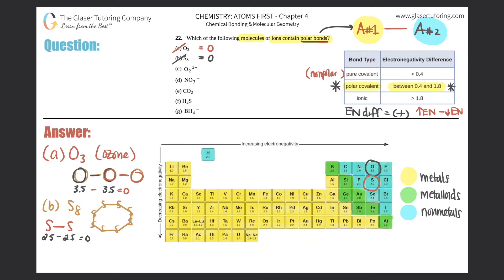Next, part C is O₂²⁻. There are only two oxygens here, so the bond has to be oxygen-to-oxygen. Just like before, oxygen is 3.5 and oxygen is 3.5, so subtracting gives zero — no electronegativity difference. This is also out.